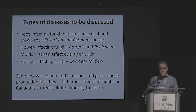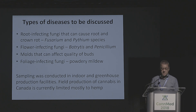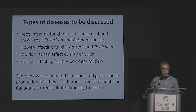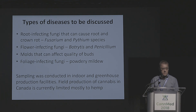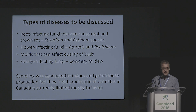I'll start with root rot and crown rot diseases — those of you familiar with the Latin names, Fusarium and Pythium — then move on to Botrytis, which is a major disease, as well as a Penicillium disease, and a few of the molds that can get onto cannabis product, and finally end with a discussion on powdery mildew. We conducted sampling in indoor and greenhouse facilities. There's very limited field production of cannabis in Canada — it's mostly hemp — so my work is limited to greenhouse and indoors.